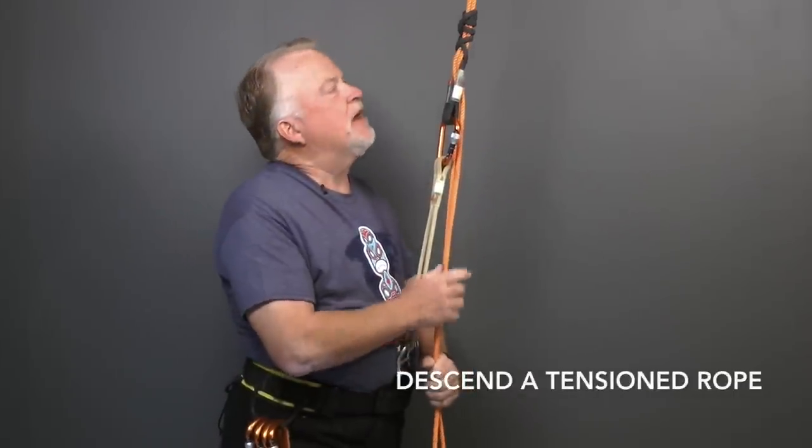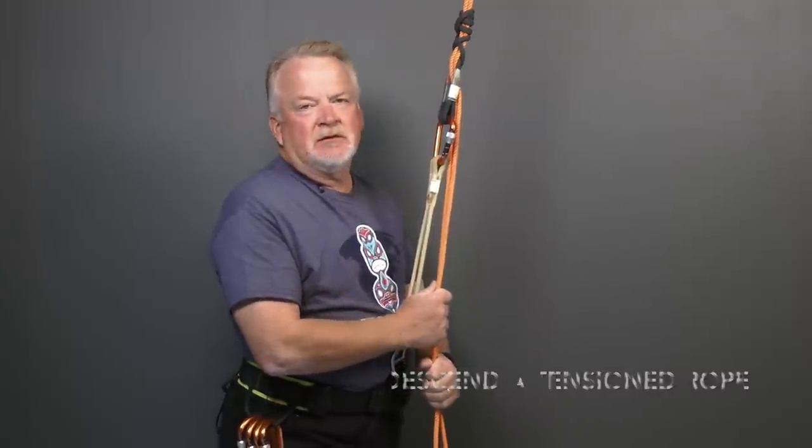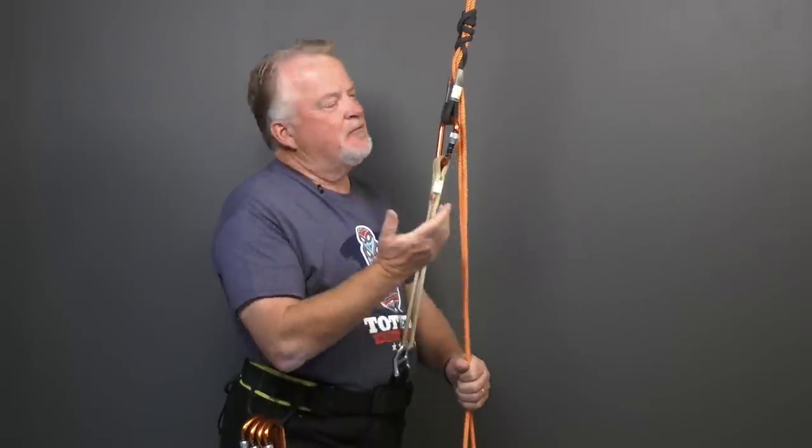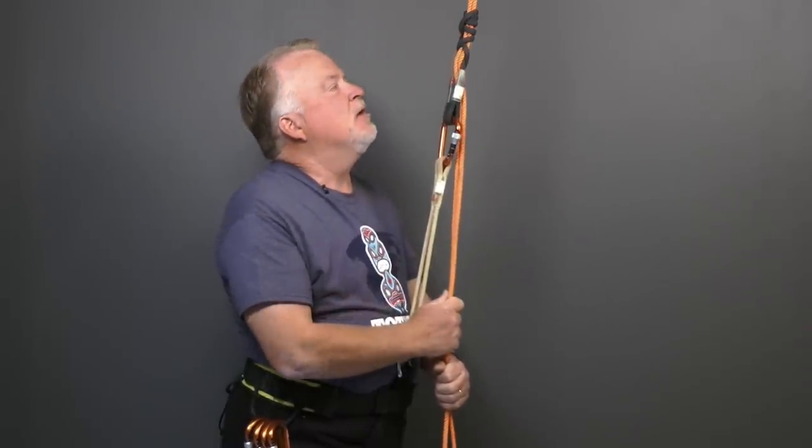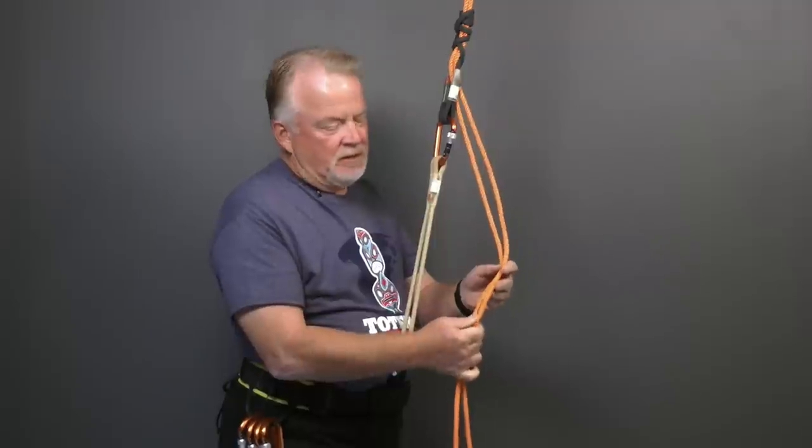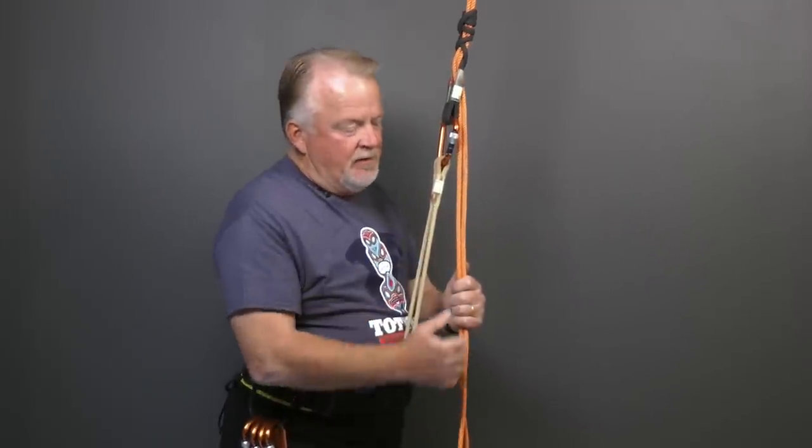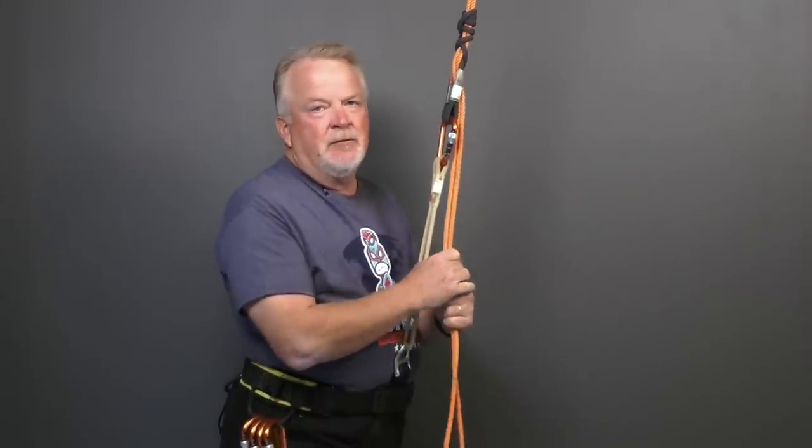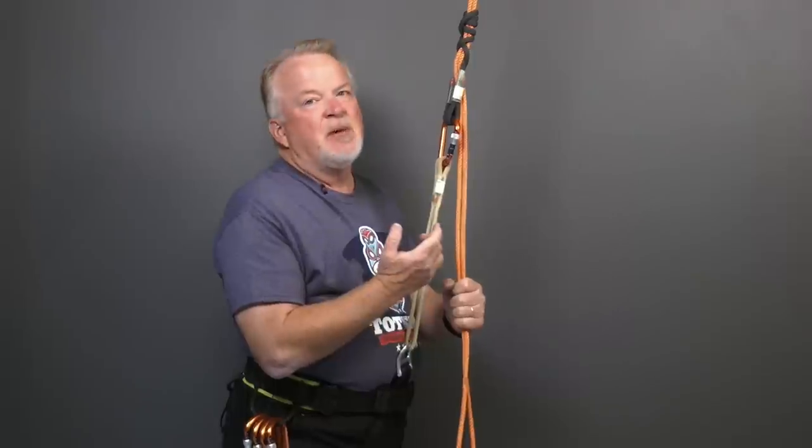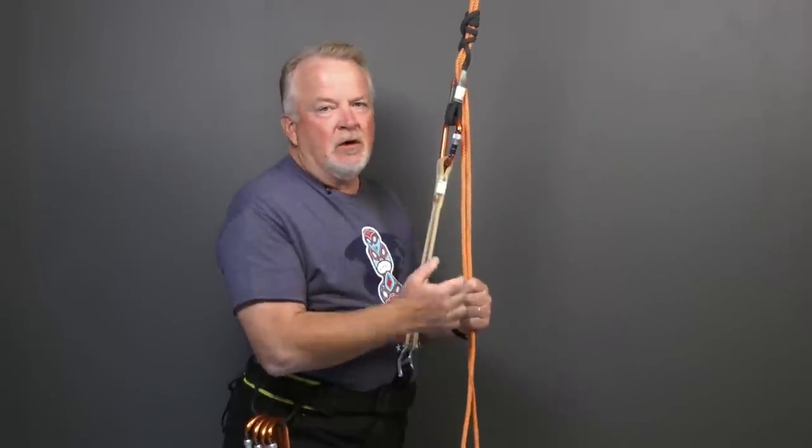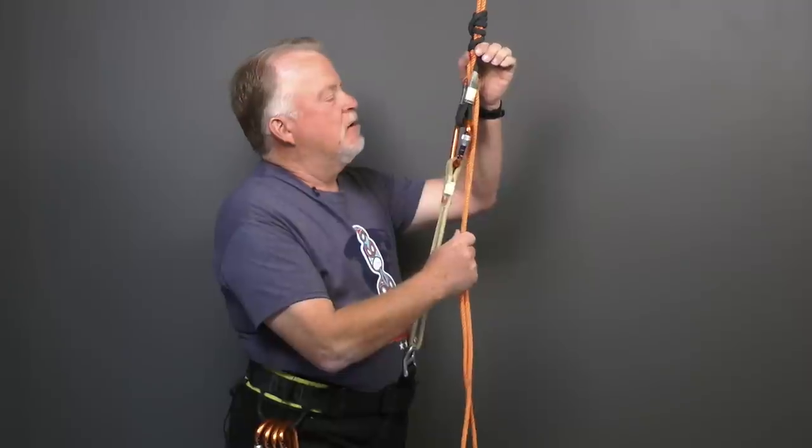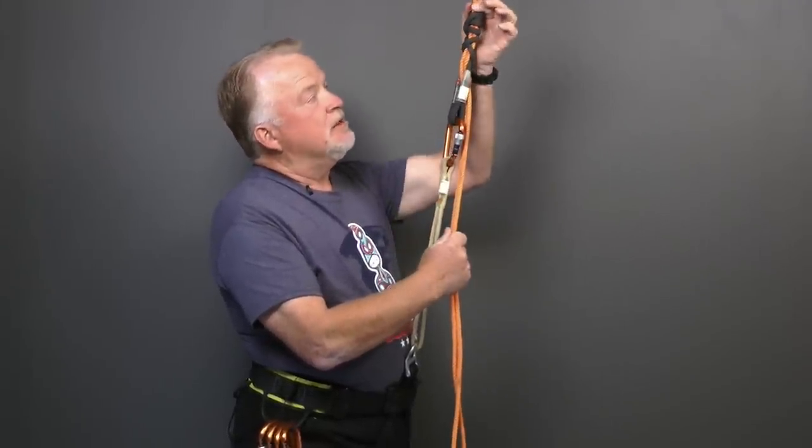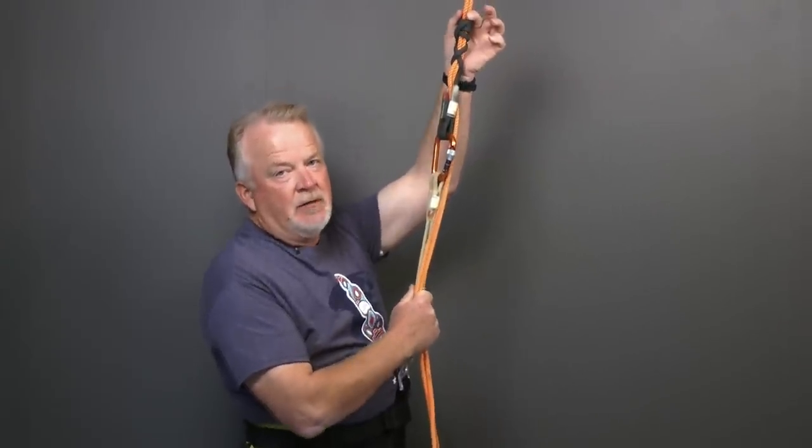With some practice, I can use the VT Prusik, tied as a Valdatan tress, to descend tensioned ropes. Why would I want to do that? Well, as an example, somebody rigged on a double strand of rope to rappel. They're on the rope. I need to get down to help them, and I don't have another rope in reserve. You can't get a normal rappelling device onto a tensioned rope. So by tying the VT onto the rope and hanging on it with an extension, I can use this to descend the rope and render aid.